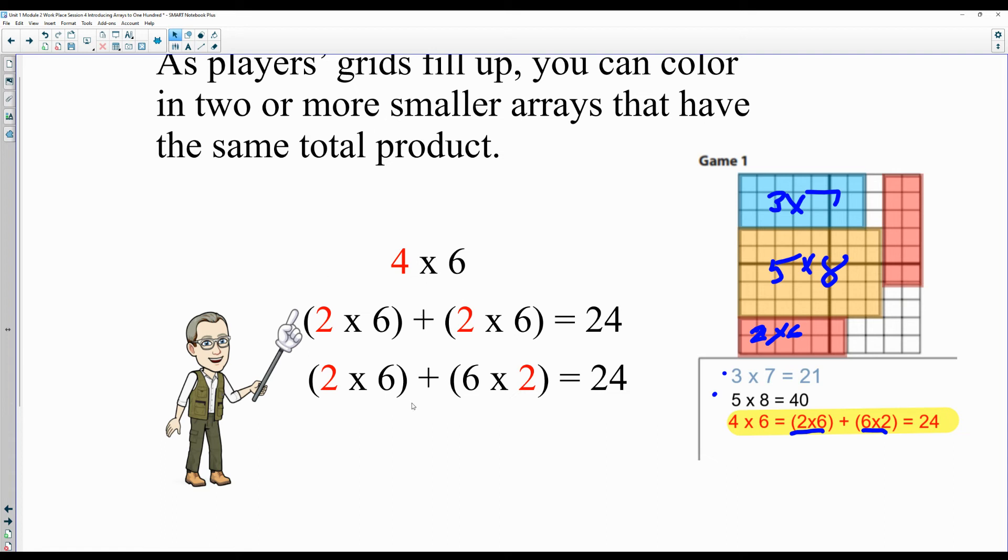In this case, you can also use the commutative property, which means you're going to leave this one alone but you're going to do a turnaround fact on this one. Here's your two times six, and up here is your six times two - six rows of two. If you're going to break something up, you do have to prove it down below in that same color.